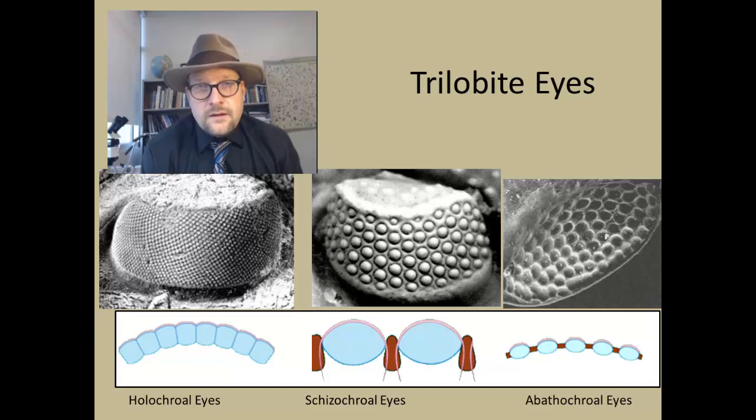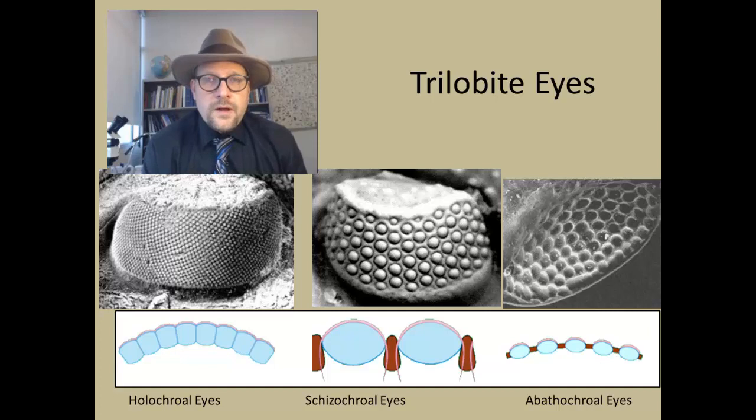A more complex eye is found in the phacopid trilobites. This is called the schizochroal eyes. Now these trilobites differ in having an interlensar material called sclera between the lenses. The lenses are really broad, really big, and the light in these trilobites is more complexly focused. It provided probably visual senses even during periods of molting when other trilobites would be blind during the process of shedding.